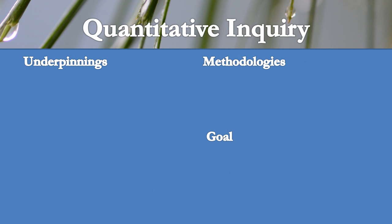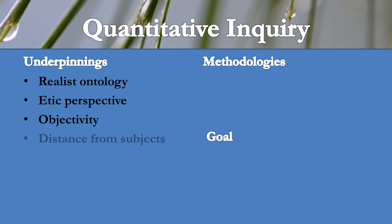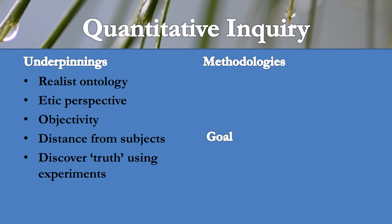Quantitative inquiry is founded on a realist ontology. Thus, the researcher maintains an etic perspective through objectivity and distance from subjects. They allow nature to answer the research questions and discover truth using experiments. Methodologies are typically experimental in nature and involve measurable tests and questionnaires.